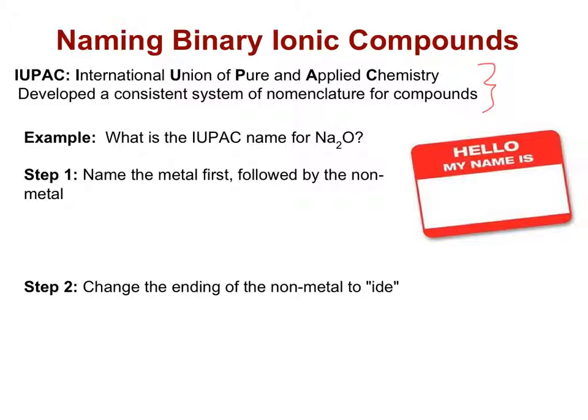So let's look at IUPAC naming for simple ionic compounds. What we want to do for this compound, Na2O, is name the metal first followed by the non-metal, and then change the ending of the non-metal to -ide. So for this example, our metal is sodium and our non-metal is oxygen, but we're going to take the -ygen part off and it becomes sodium oxide.